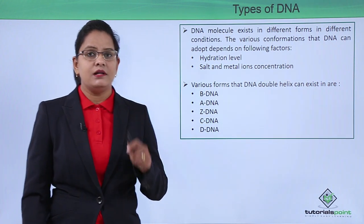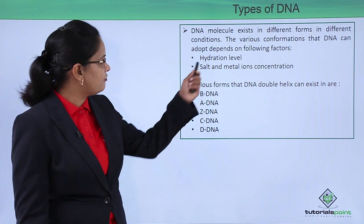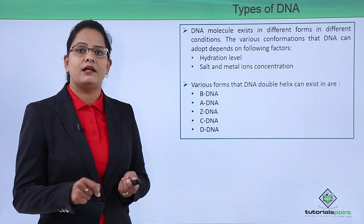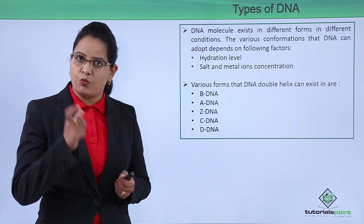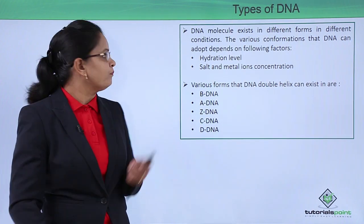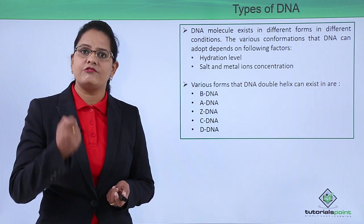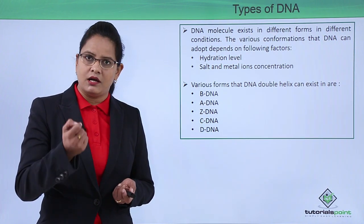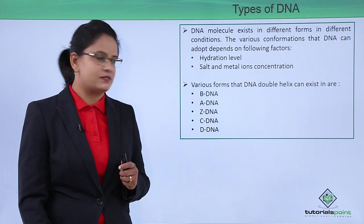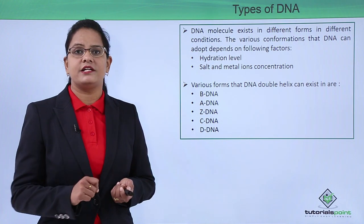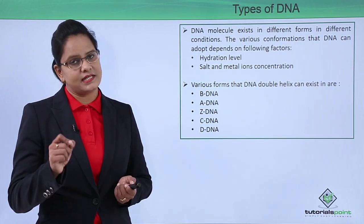The different forms of DNA depend on the conditions it is present in. The factors responsible for different structures of DNA are: first, the hydration level — meaning the amount of water present in the surroundings — and second, the salt and metal ion concentrations. The various forms that DNA can take are B-DNA, A-DNA, Z-DNA, C-DNA, and D-DNA.